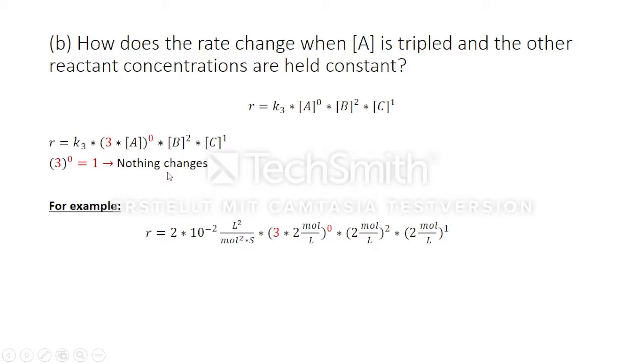Below you can find the example from the beginning with a tripled concentration of A. Again, the rate is equal to zero point one six.